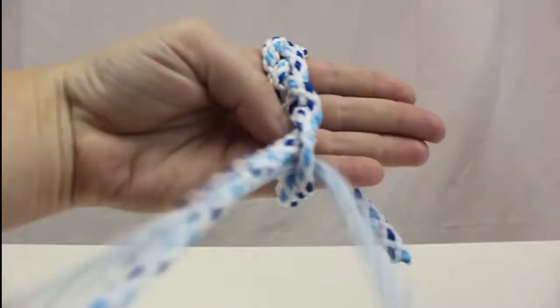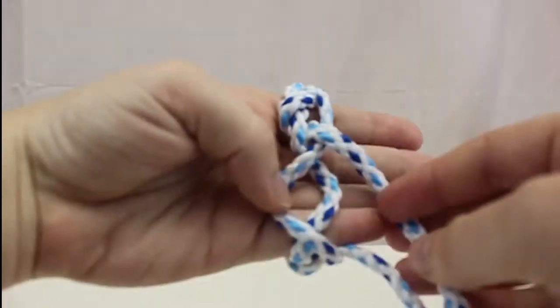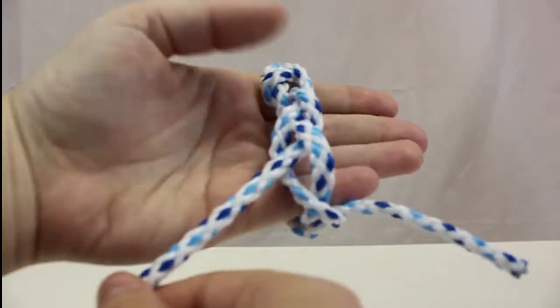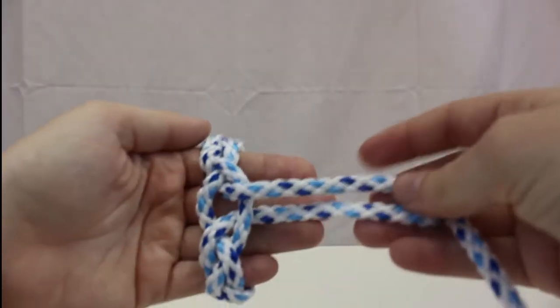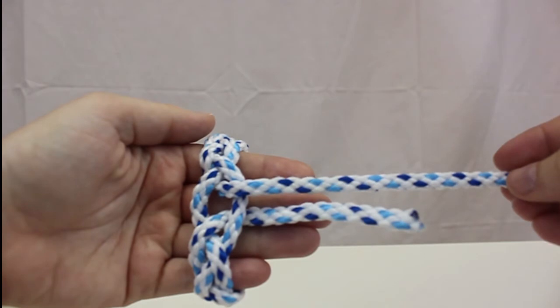This is the basic motion you're going to repeat all the way around your bracelet. You're going to keep going until you're about to do yet another loop, but now you'll see that your long end is parallel with your original three inch tail.